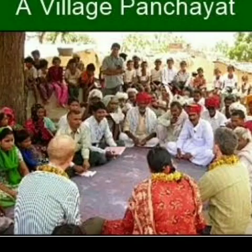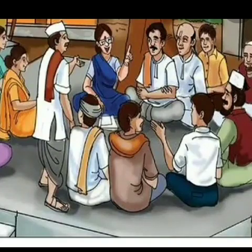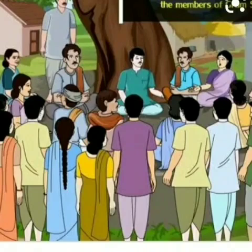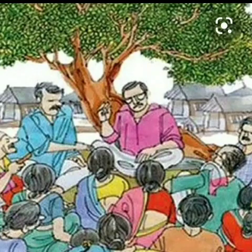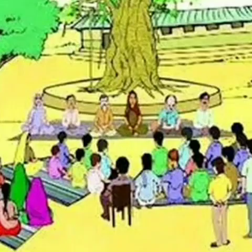Gram Panchayat is the smallest unit at the village level. Each village, or a group of villages in some states, has a Gram Panchayat. This is a council consisting of several ward members, often called panch, and a president or Sarpanch, who are directly elected by all the adult population living in that ward or village.